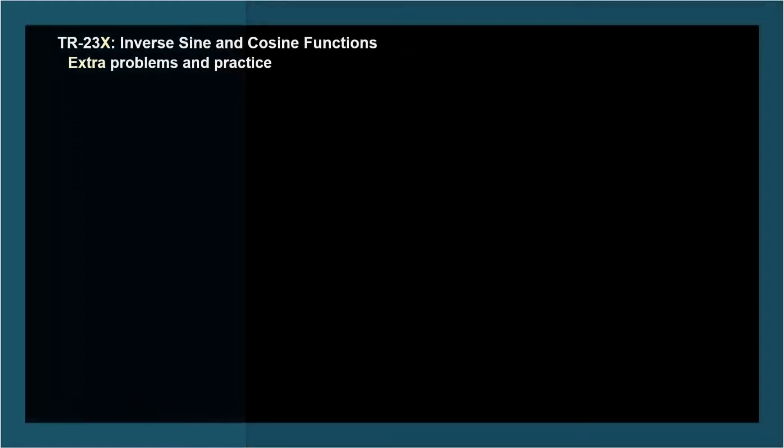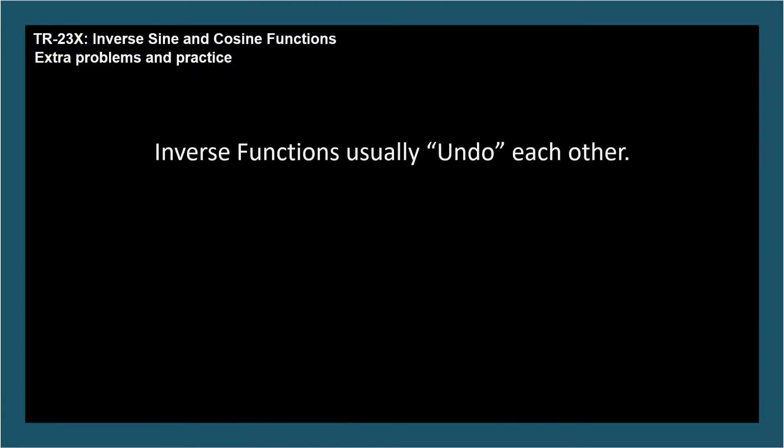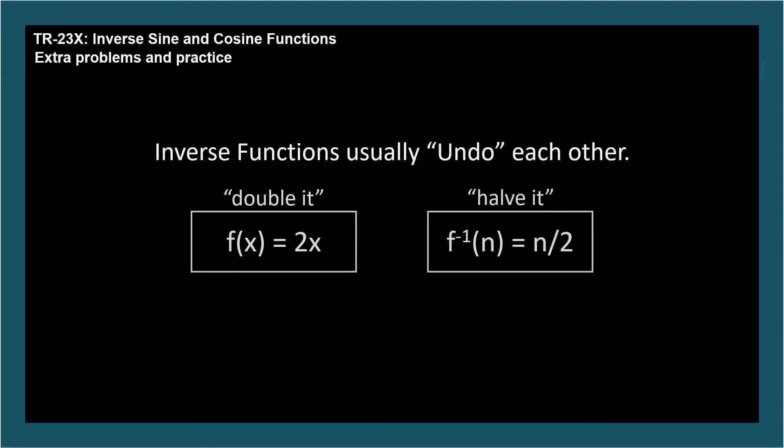Most inverse functions have the interesting, even definitive, characteristic of undoing each other. For example, if I had a function that doubled its argument and another, its inverse, that halved it, when I feed the output of one function into the input of the other, I'd get back what I started with.